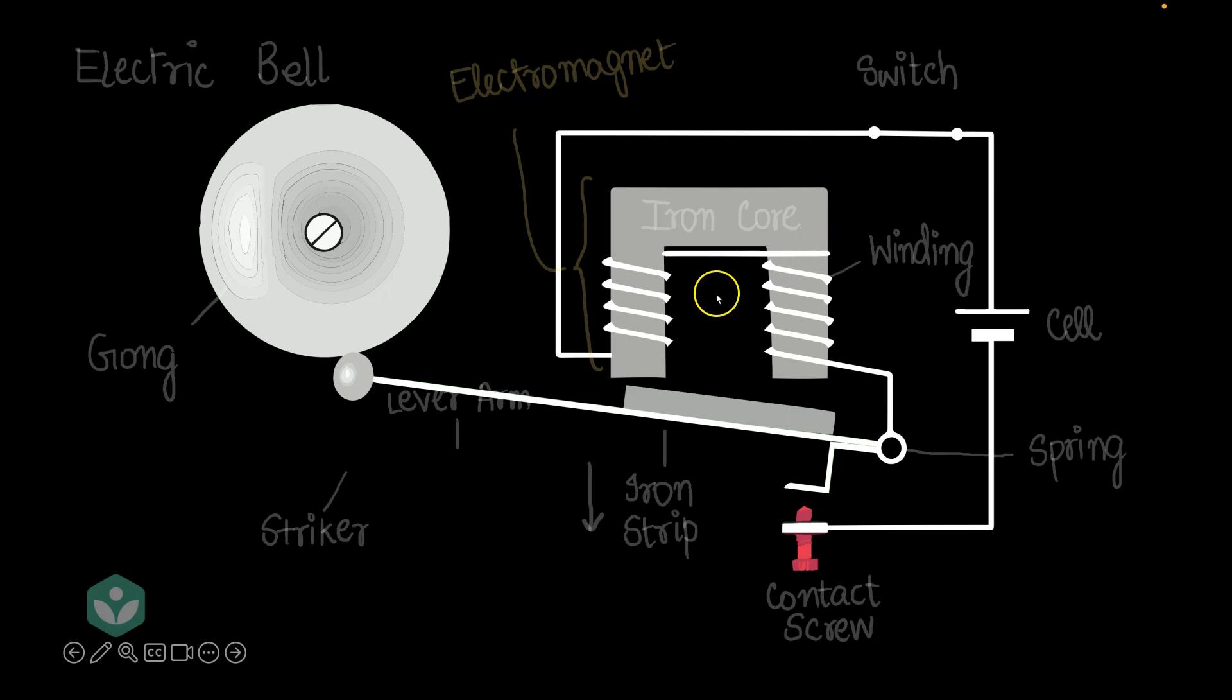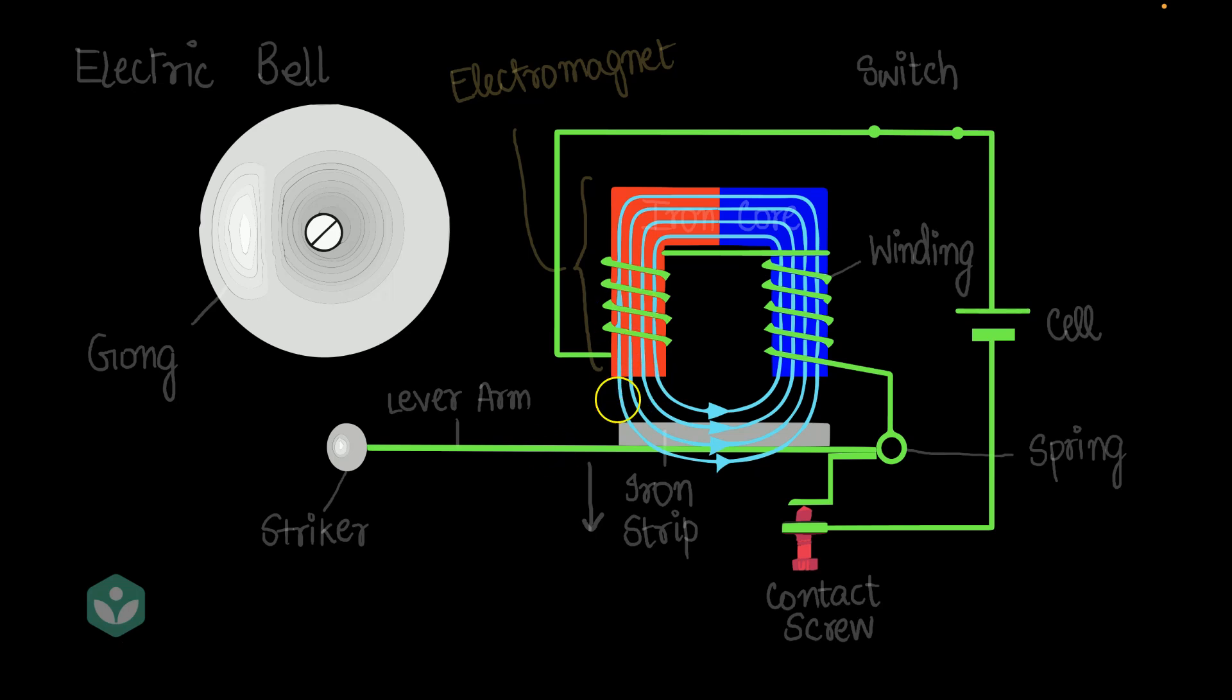And because the electromagnet is now being turned off, the spring will pull this lever arm back into position. And that's what happens. But the moment the spring pulls it back into position, the moment the lever arm becomes horizontal once again, the circuit would be completed here, there's no gap here now, and the electromagnet would be turned on once again.